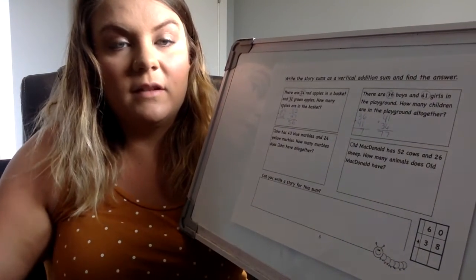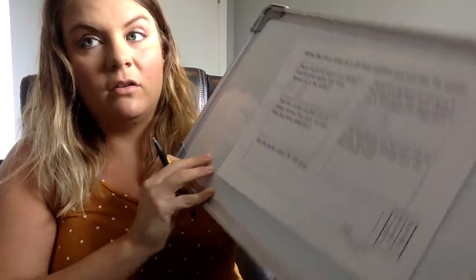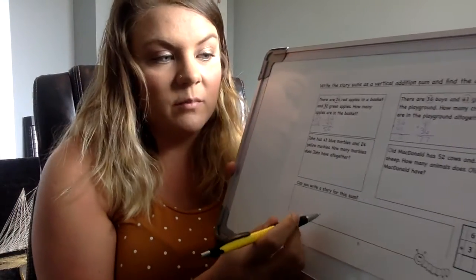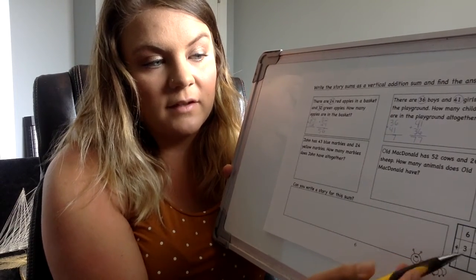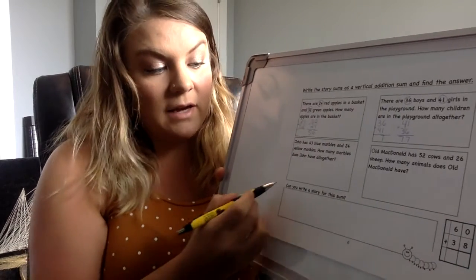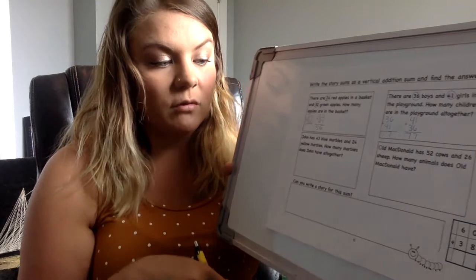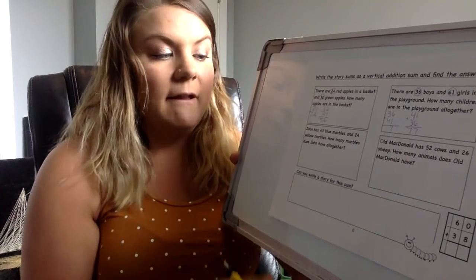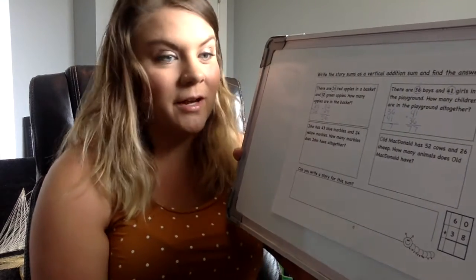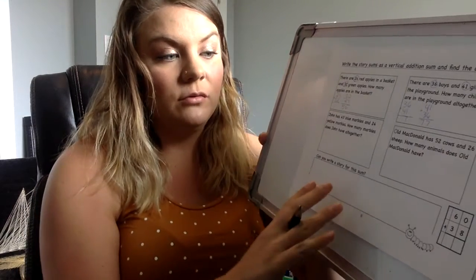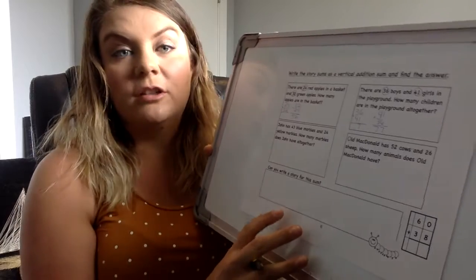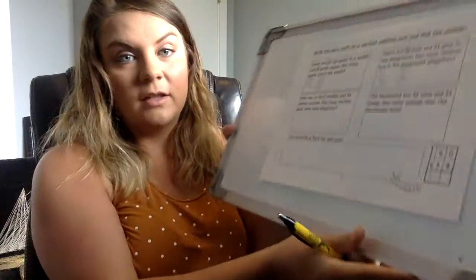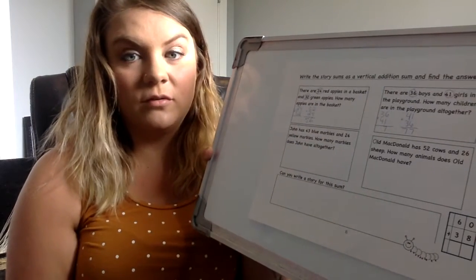So friends, for the next two, you're doing the same thing. You are figuring out how many marbles they have and how many animals does Old McDonald have. Then this one at the bottom, friends, it gives you the question already. It says 60 plus 38. So it's asking you, can you write a story for the sum? So you are coming up with your own story. It can be how many bugs do we have in the garden, it can be how many different flowers are outside, it can be how many cats and dogs you have. You can write your own story. I want you to send a picture of your story to your teacher and solve it as well. Okay, so that is your job for today. You have these two pages and then send this question to your teacher.